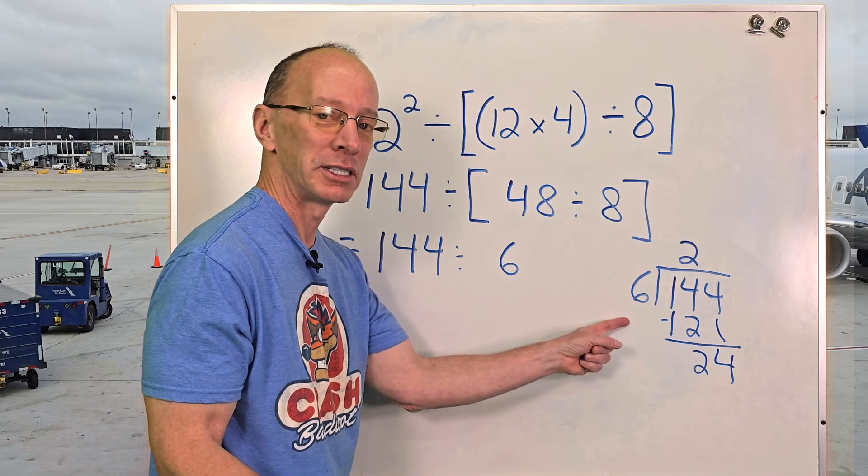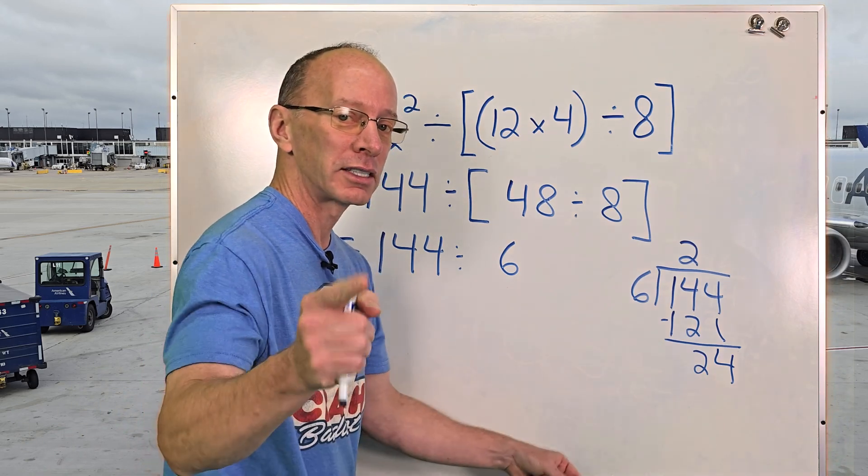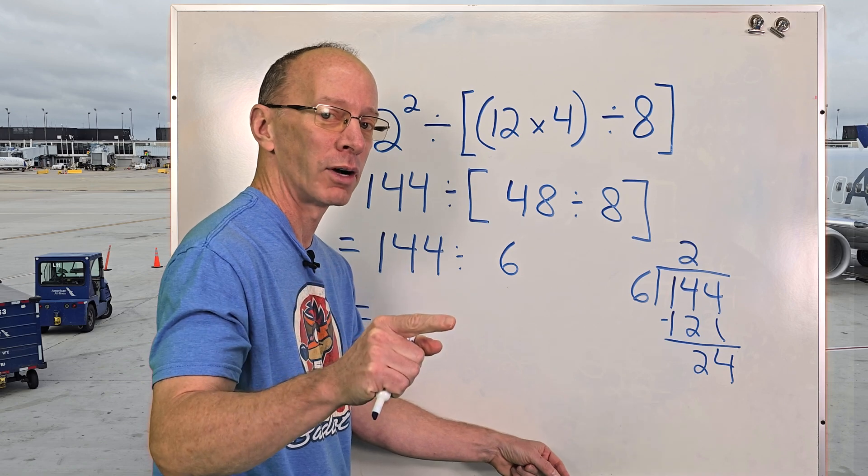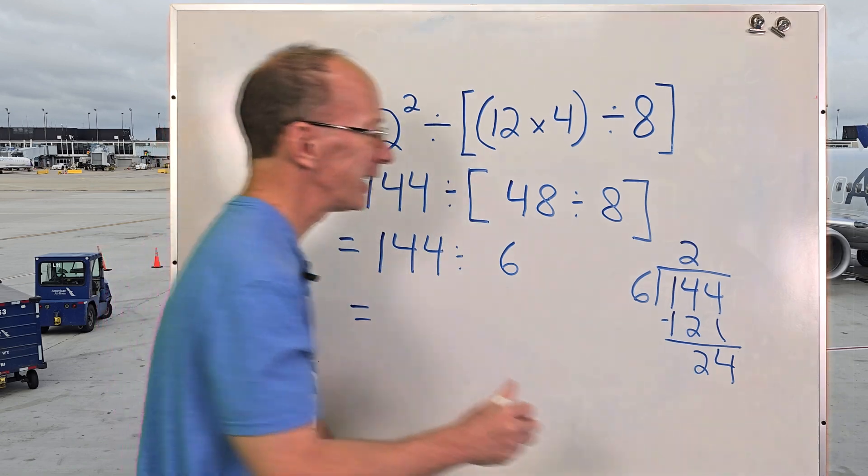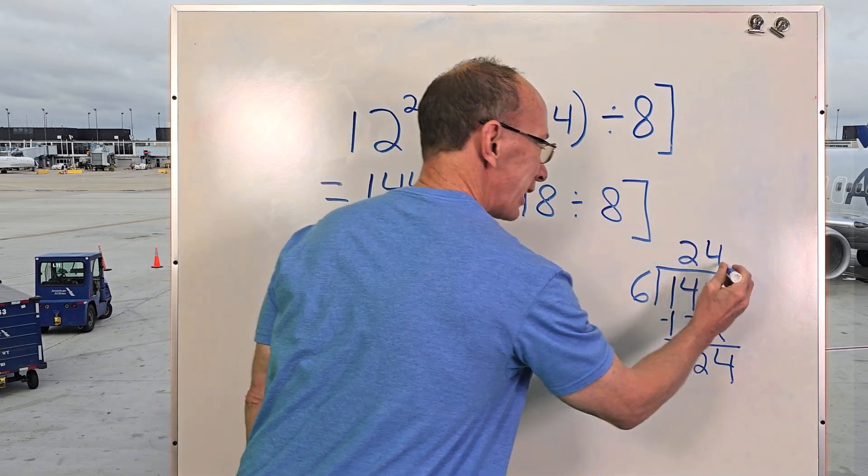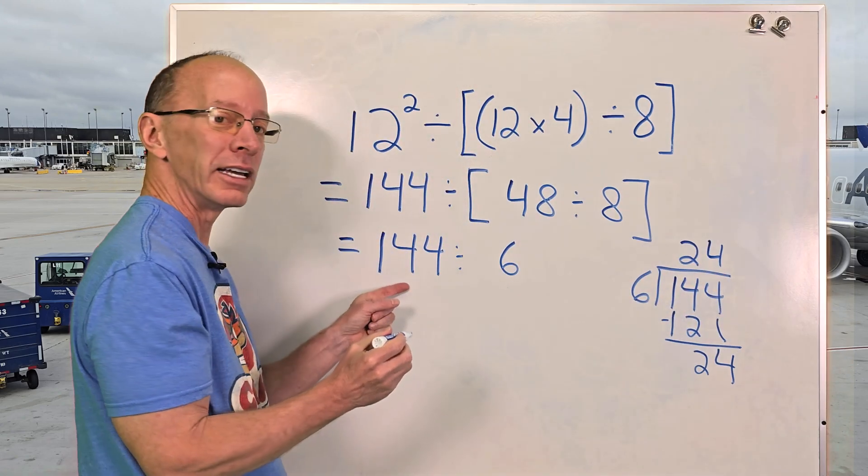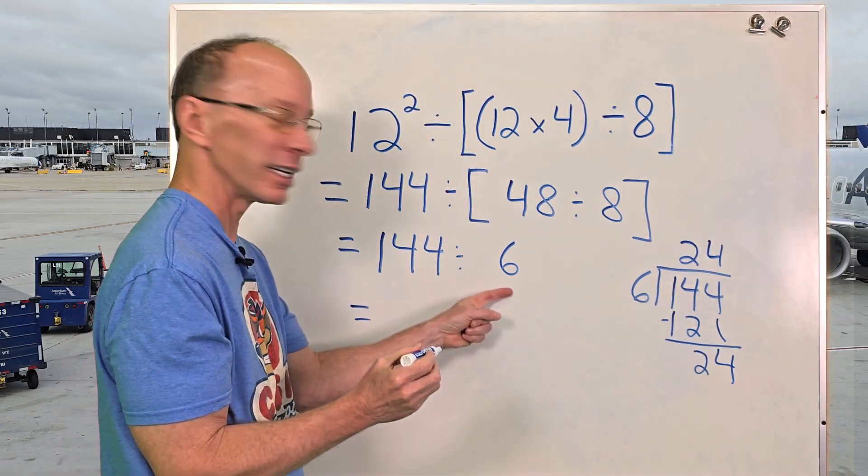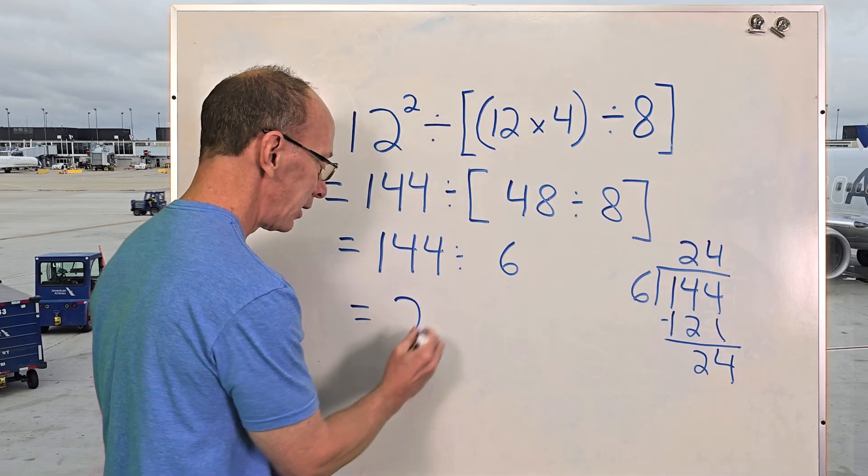And then how many times does 6 go into 24? 6 times 2 is 12. 6 times 3 is 18. 6 times 4 is 24. Bingo, you got it. That's our answer. So 144 divided by 6 equals 24.